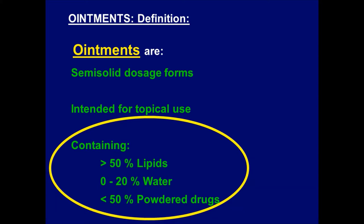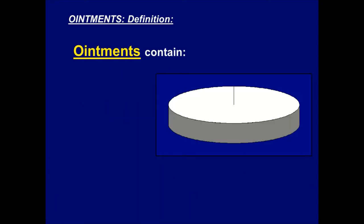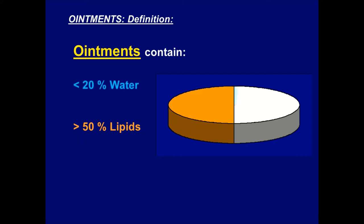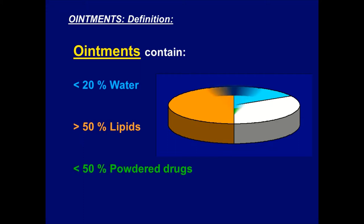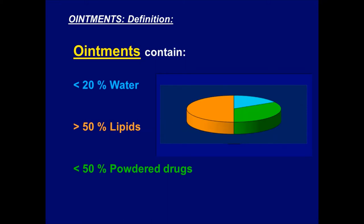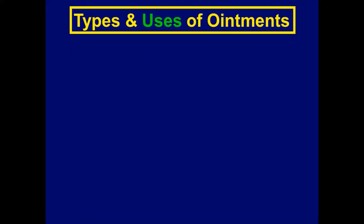So ointments may contain 0 to 20% water. If they contain powdered drugs, their ratio does not exceed 50%. This is the characteristic composition of ointments: more than 50% lipids, 0 to 20% water, and less than 50% powdered drugs. So what are the types and uses of ointments?